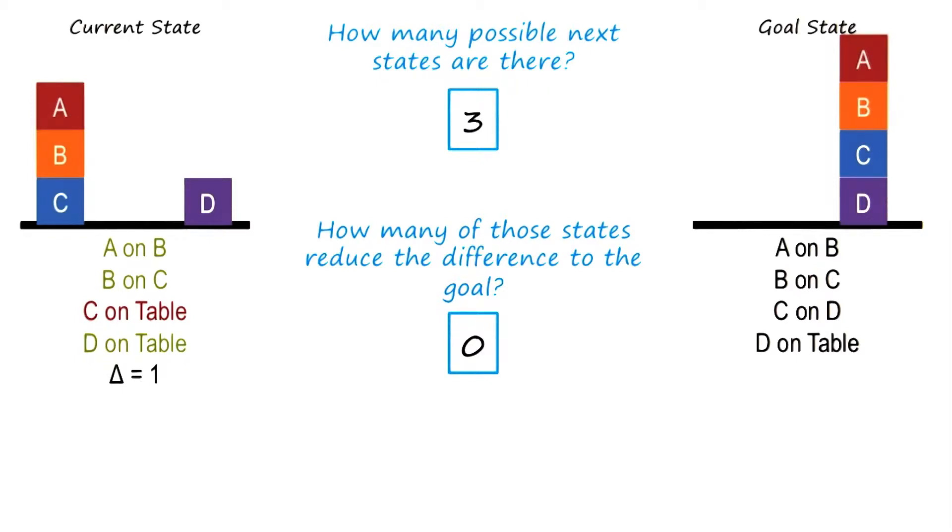What answers did you come up with, David? I said here there are three possible next states. We can put A on the table, A on D, or D on A.